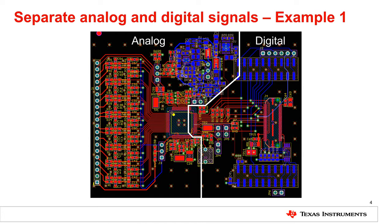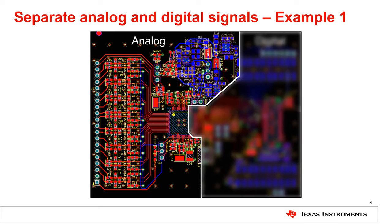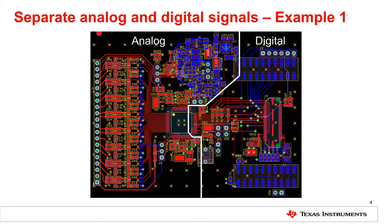Here's an example of a board under development. In the center of the board is an analog to digital converter, or ADC. The ADC has analog signals feeding in from the left and digital signals going out from the right. Top layer signals are in red and bottom layer signals are in blue. Notice that all the analog signals with the corresponding components and traces are kept on the left side of the board, and all the digital signals are kept on the right. This is a good way to reduce unwanted signal coupling.